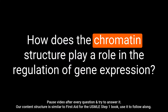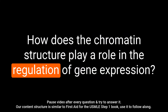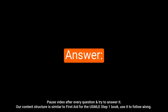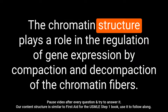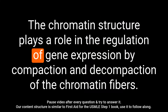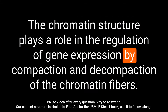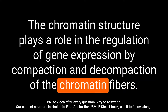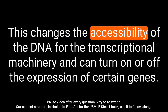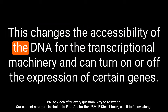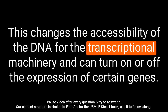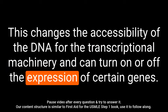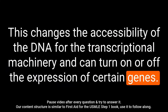Question: How does the chromatin structure play a role in the regulation of gene expression? Answer: The chromatin structure plays a role in the regulation of gene expression by compaction and decompaction of the chromatin fibers. This changes the accessibility of the DNA for the transcriptional machinery and can turn on or off the expression of certain genes.